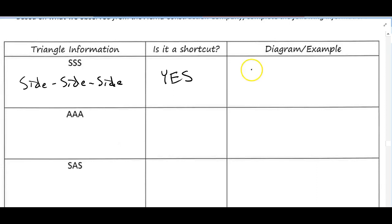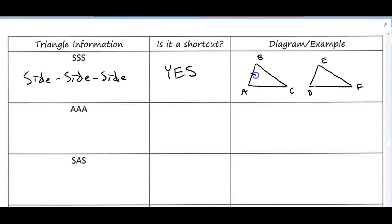All right, and hopefully you found that out. And then for our diagram and example, let's draw a quick picture here. Again, I'm drawing these triangles in the same orientation, but they don't always have to be. So there's ABC. We'll call this one DEF. And if we were going to show side, side, side congruency on this triangle, I would just put the same tick marks on each side. So there's AB and ED, and then BC and EF, and then AC and DF.